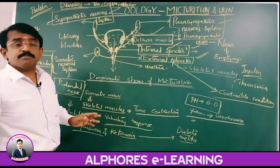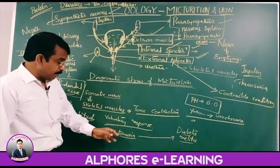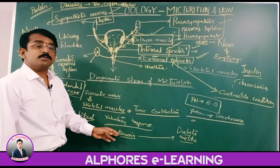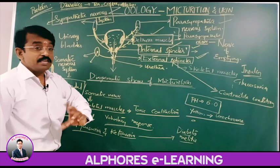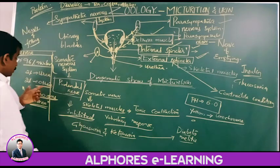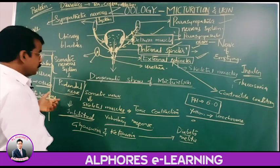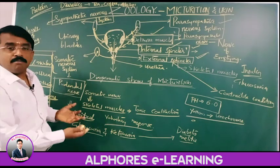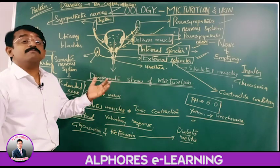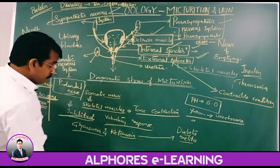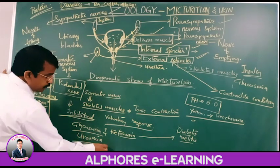If excessive glucose is there, that is glycosuria. If ketone bodies are increasing, that is ketonuria. Glucose normally is not present in urine; if levels increase, it denotes glycosuria, and ketone bodies increasing denotes ketonuria — these are the indicators of diabetes mellitus.